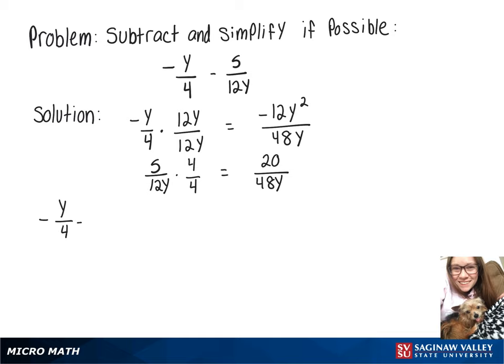Now we can take our original problem of negative y over 4 minus 5 over 12y and rewrite it as negative 12y squared over 48y minus 20 over 48y.